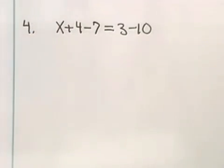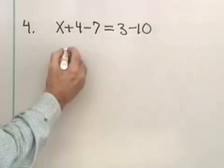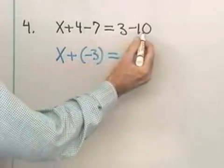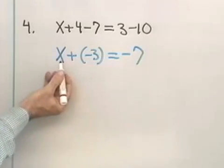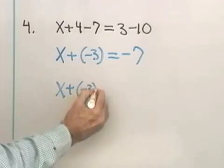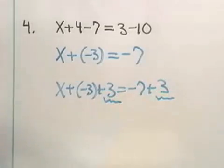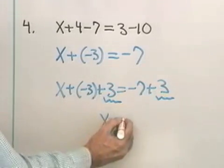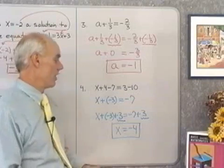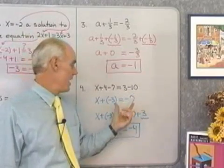Here's our next one. This time I need to simplify a little bit before I get started with the addition property — I want to simplify each side as much as possible first. x plus 4 subtract 7 gives negative 3, and 3 subtract 10 gives negative 7. Now I want to isolate x, so I need to get rid of the negative 3 by adding its opposite: x plus negative 3 plus 3 is equal to negative 7 plus 3. x plus 0 is x, and negative 7 plus 3 is negative 4. The solution is x equal negative 4. The only difference here is that I had to simplify each side first, then use the addition property.